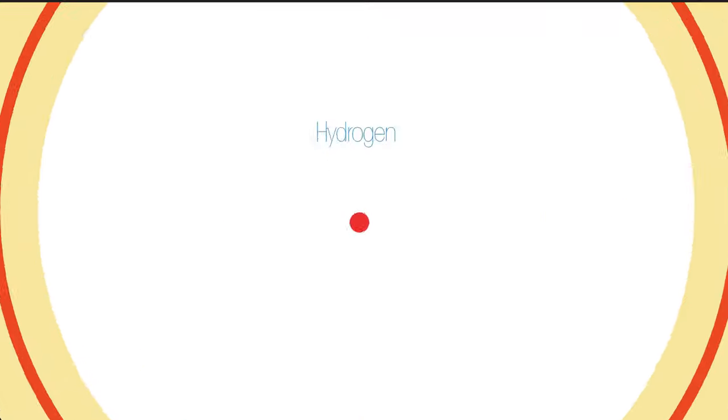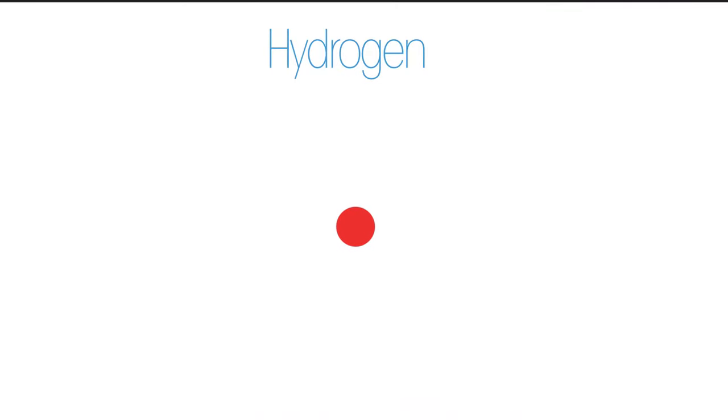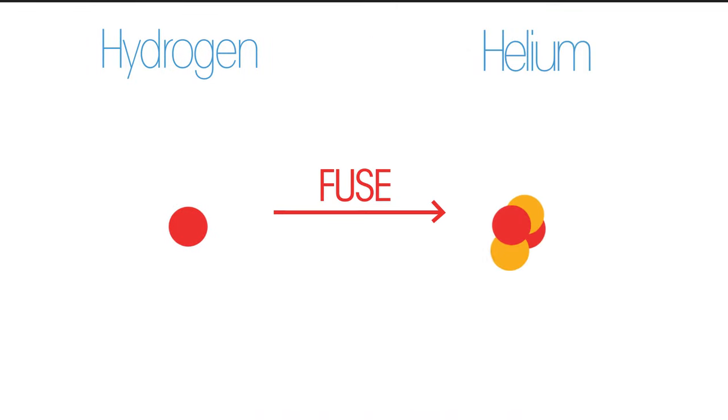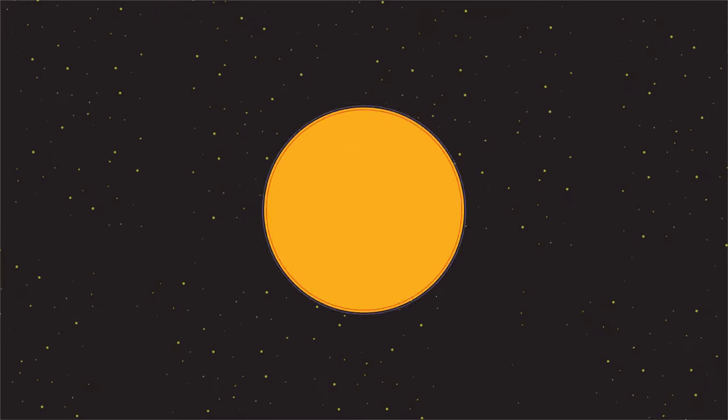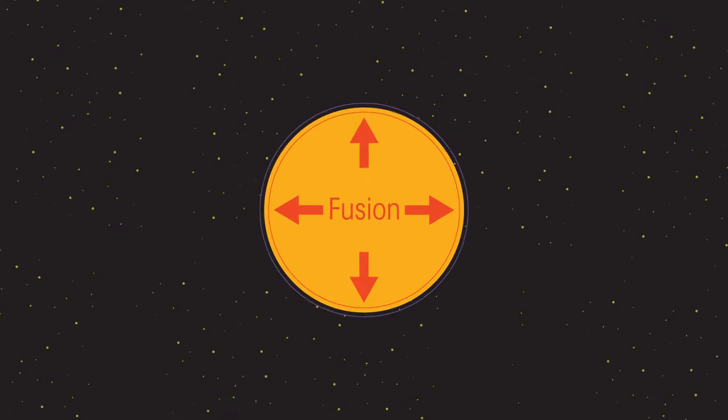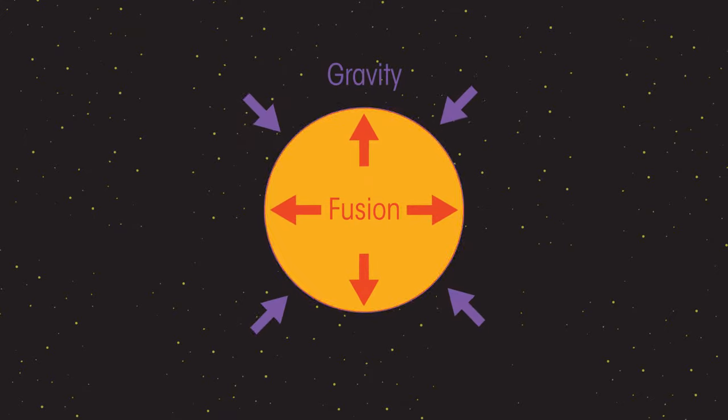A star forms when it is hot enough for hydrogen nuclei to fuse to form helium. For more about nuclear fusion, watch this video. The star then enters a long stable period where the outward pressure of the heat generated by nuclear fusion counteracts the force of gravity.